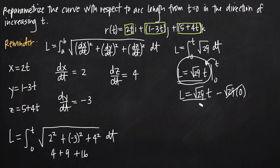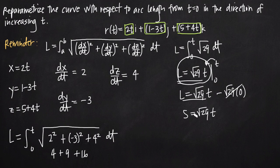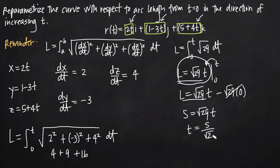Now that we have the arc length function, we set s equal to square root of 29 times t, using s as the arc length parameter. We want to solve this equation for t, because we're going to substitute whatever we get for t back into the vector function wherever t appears. Dividing both sides by square root of 29, we get t equals s over square root of 29. We now have t in terms of s, so we've reparametrized the curve.